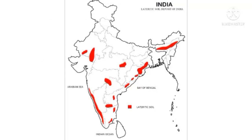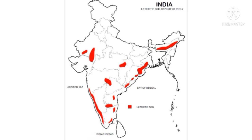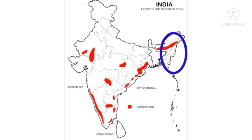The regions where laterite soil is found include the Western Ghats region of Maharashtra, the coastal Arabian Sea belt, Odisha, West Bengal, and the North-East region of India.